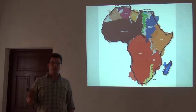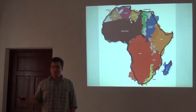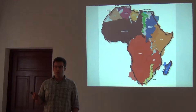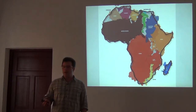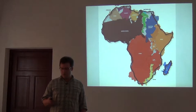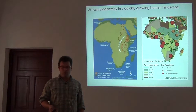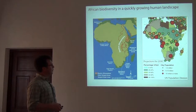Just like groups of people go across international boundaries, so does the fauna and flora. The surface of the moon is 38 million square kilometers; the surface of continental Africa is 30 million square kilometers — it's not that much smaller than the surface of the moon. So we have this enormous area to work with, and we're studying biodiversity in this very quickly growing human landscape.